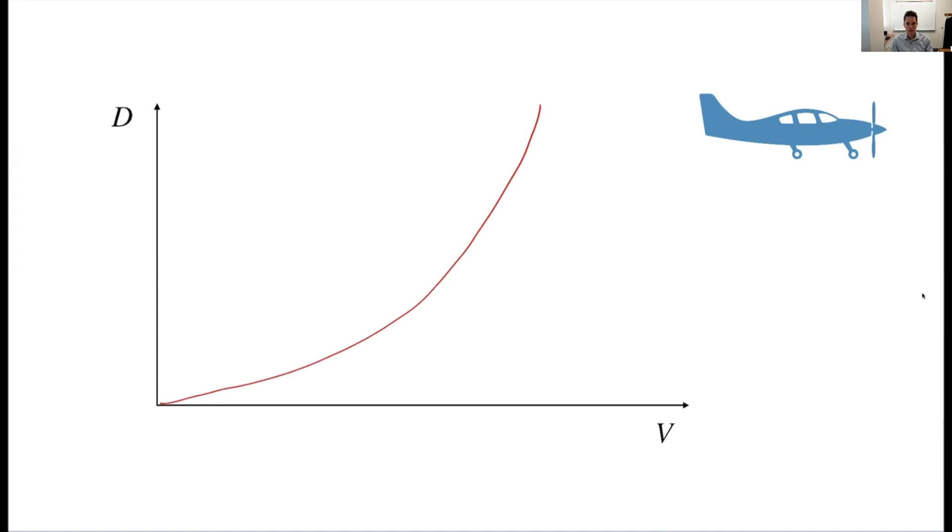And we've all experienced this somewhat. If you've been in a moving vehicle, put your hand out the window. You can feel that the drag certainly increases. Maybe you can't feel it's quadratic, but you certainly feel it increases. But this actually is not correct for an airplane, which then begs the question, what is different about an airplane as compared to, say, a car?